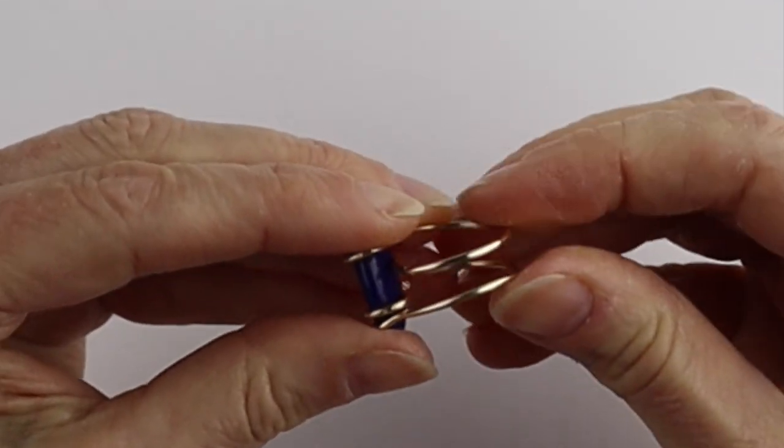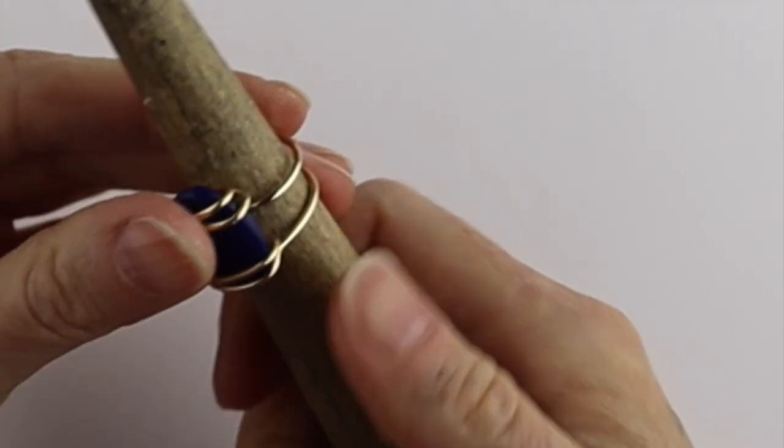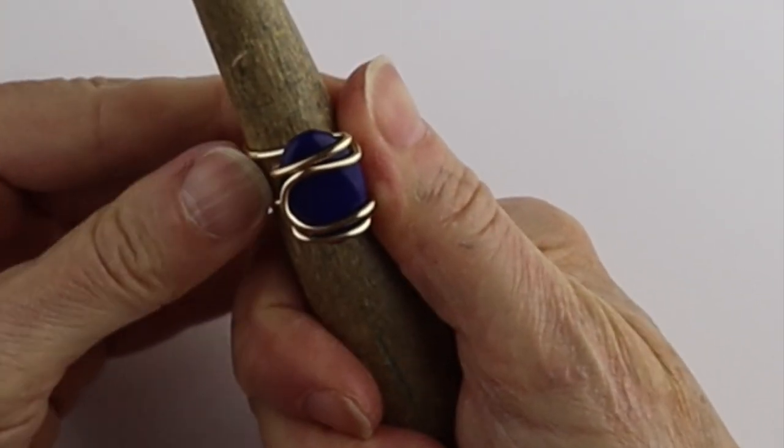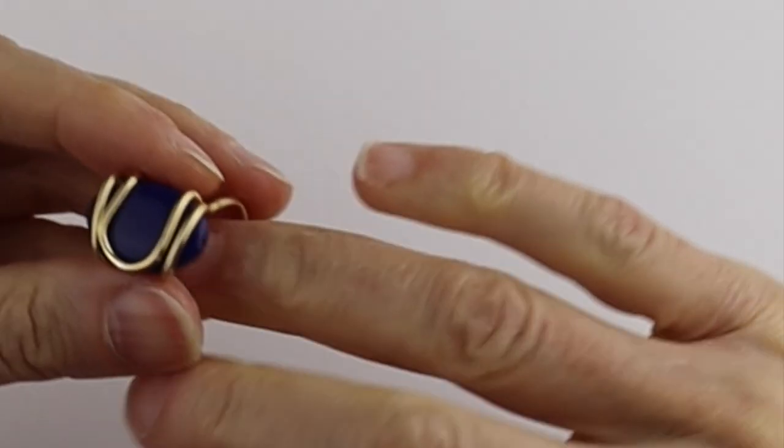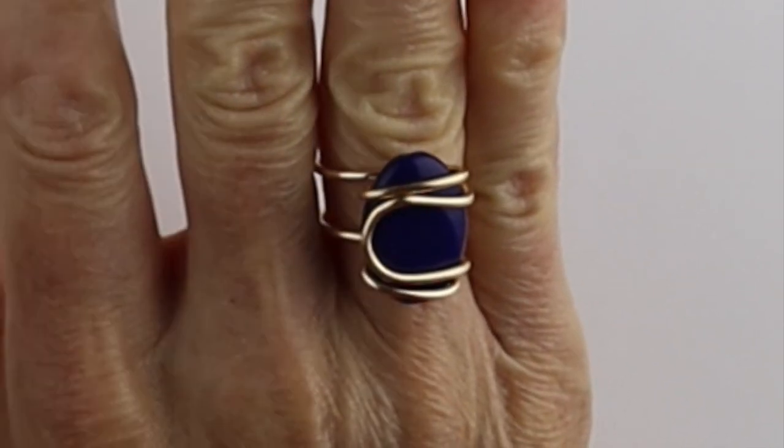And you can bring these a little more together if you like. And you can always put it back on the ring mandrel. And there you have your funky chunky ring with the glass cabochon.